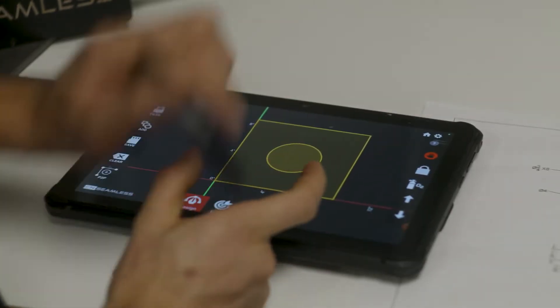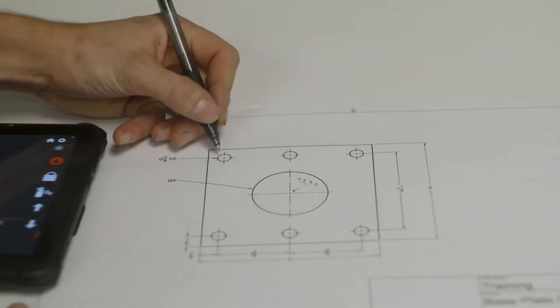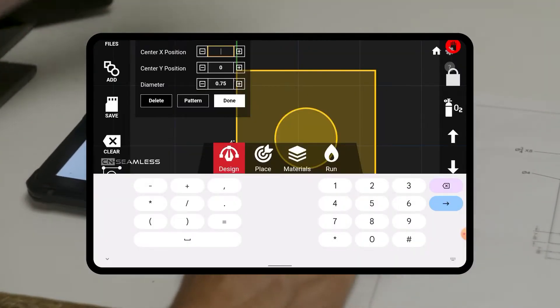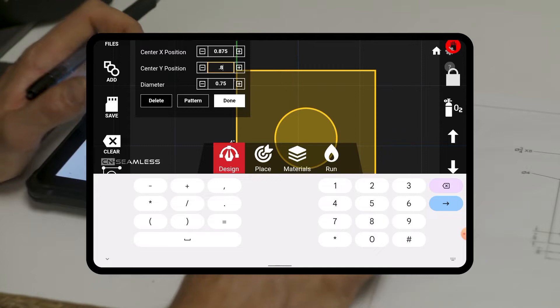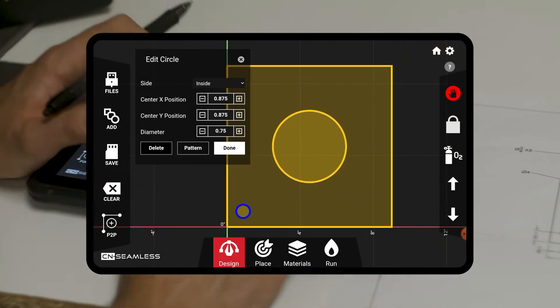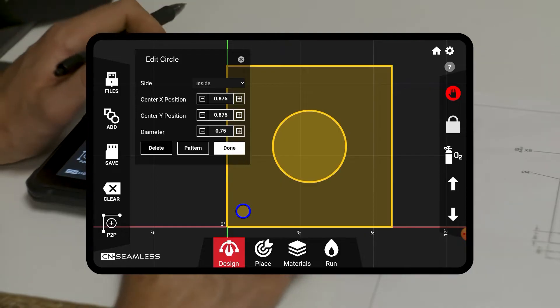So the last step is to lay out this bolt hole pattern. Back on the UI, I'm going to click add again, circle, seven eighths over and seven eighths up. So we have our first circle right there. And now we need to get the other six. Click on that circle, and then click this pattern button.